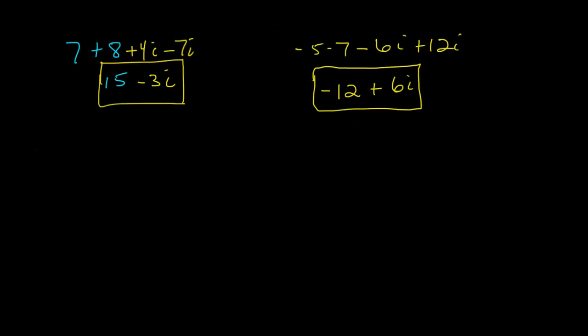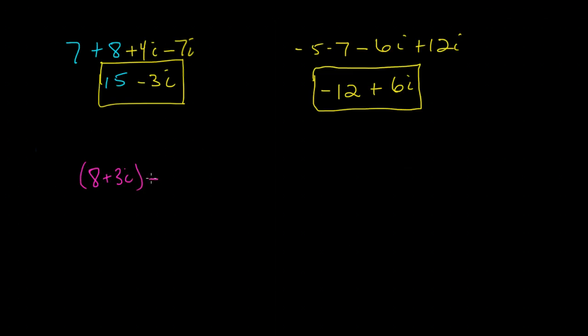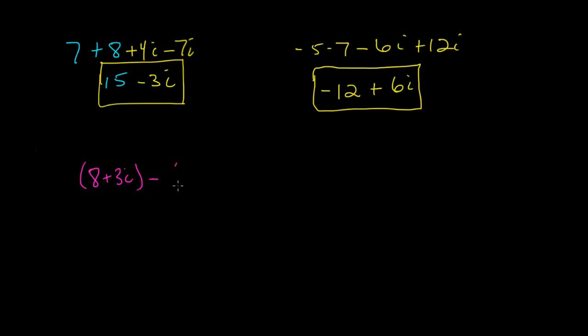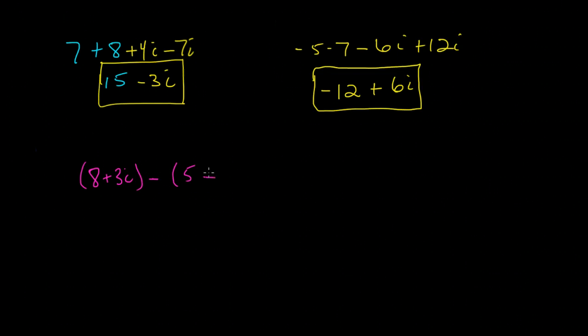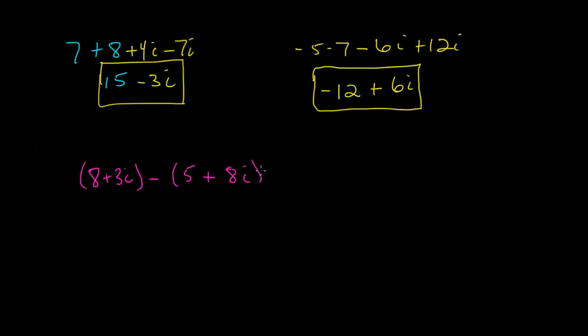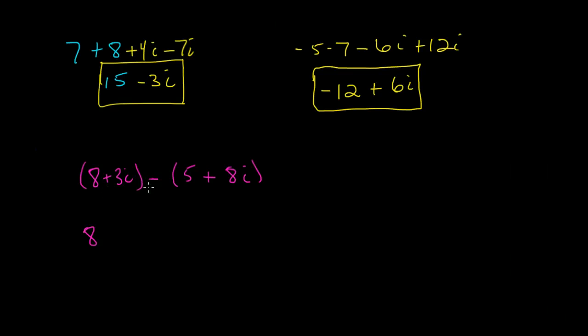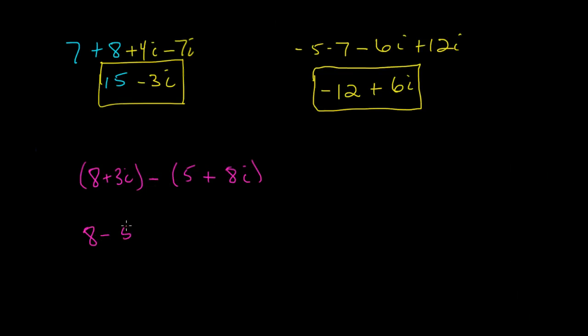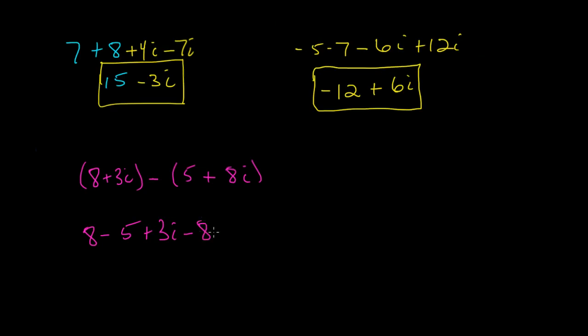If I take 8 plus 3i and from that I subtract 5 plus 8i, well, in essence what I'm doing is I am taking 8 minus a positive is minus 5. And then to that I will add 3i, and a negative and a positive is minus 8i.